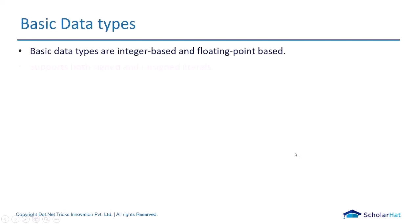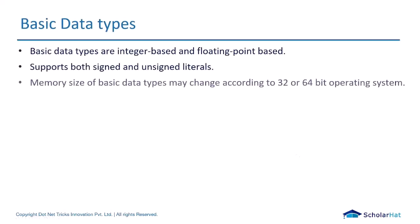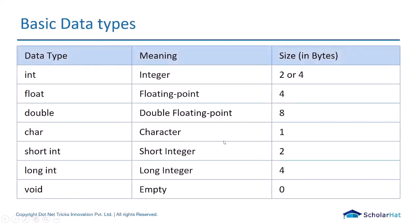When you talk about primitive or basic data types, these are integer-based or floating-based data types — either integer, character, double, or float. They support both signed and unsigned literals. The size taken by these data types is totally dependent on the architecture of the operating system, whether it's 32-bit or 64-bit. You can see the size using the sizeof operator in the compiler.